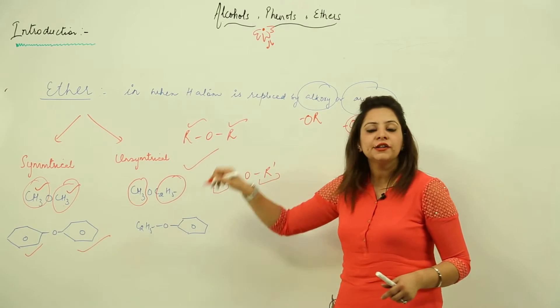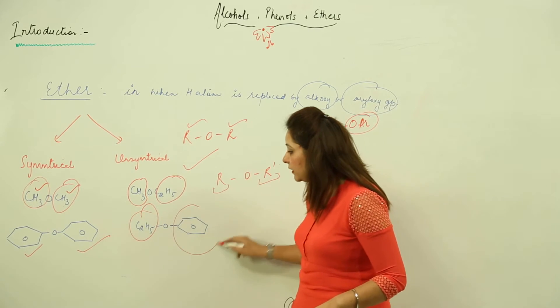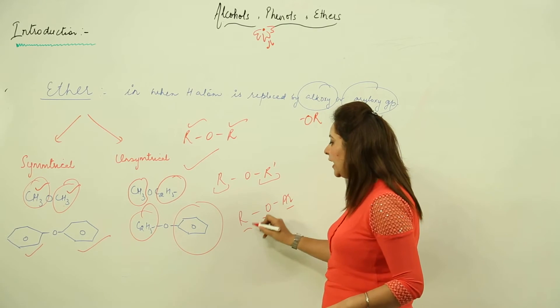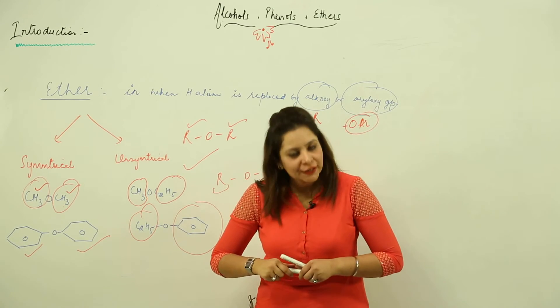we say that they fall in the category of unsymmetrical ether. Likewise, you can see that this is an alkyl group and this is an aryl group. That means again, different groups, so it belongs to the category of unsymmetrical ether.